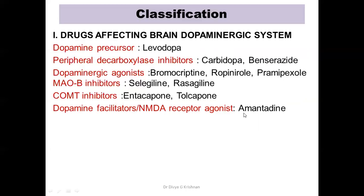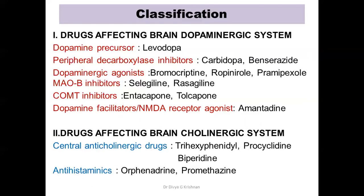The second class of drugs decreases cholinergic activity in the brain. These are central anticholinergic drugs — trihexyphenidyl, procyclidine, biperiden — and antihistaminics — orphenadrine and promethazine.